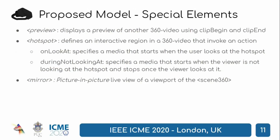Besides traditional media objects, we also support some special elements. The first, preview, displays a preview of another 360 video using clip-begin and clip-end, and is mainly used for navigation together with the on-select attribute. Hotspot is used to define an interactive region in space in a 360 video, and has two special attributes: on-look-at, which defines an element that begins once the user looks at the hotspot, and during-on-looking-at, which defines a media object that starts when the user is not looking at the hotspot and stops when it is looked at again. And mirror, which defines a picture-in-picture live view of a viewport of the Scene360.